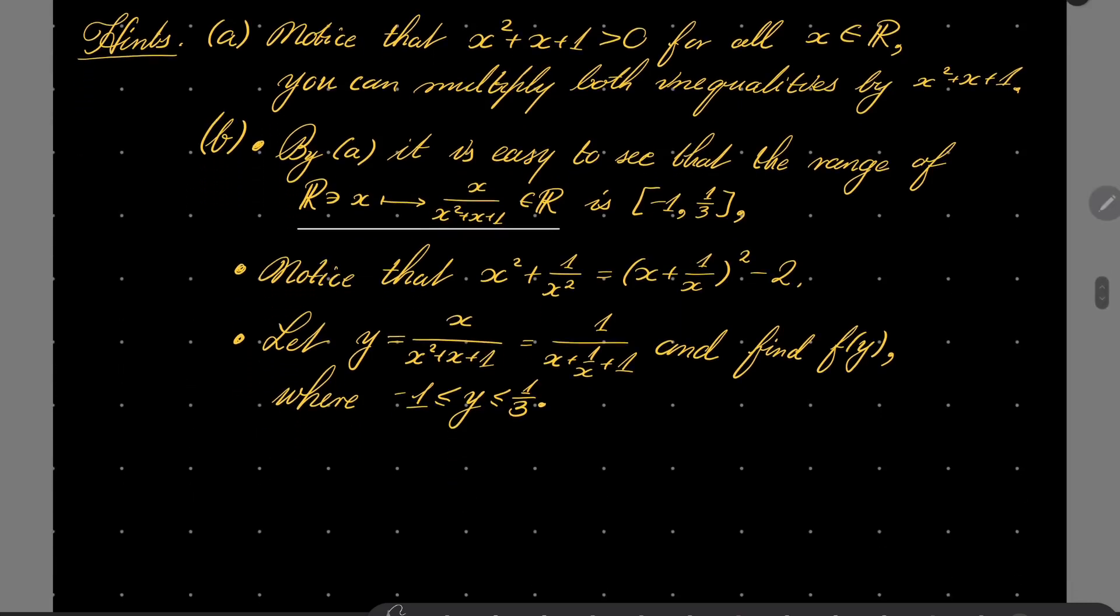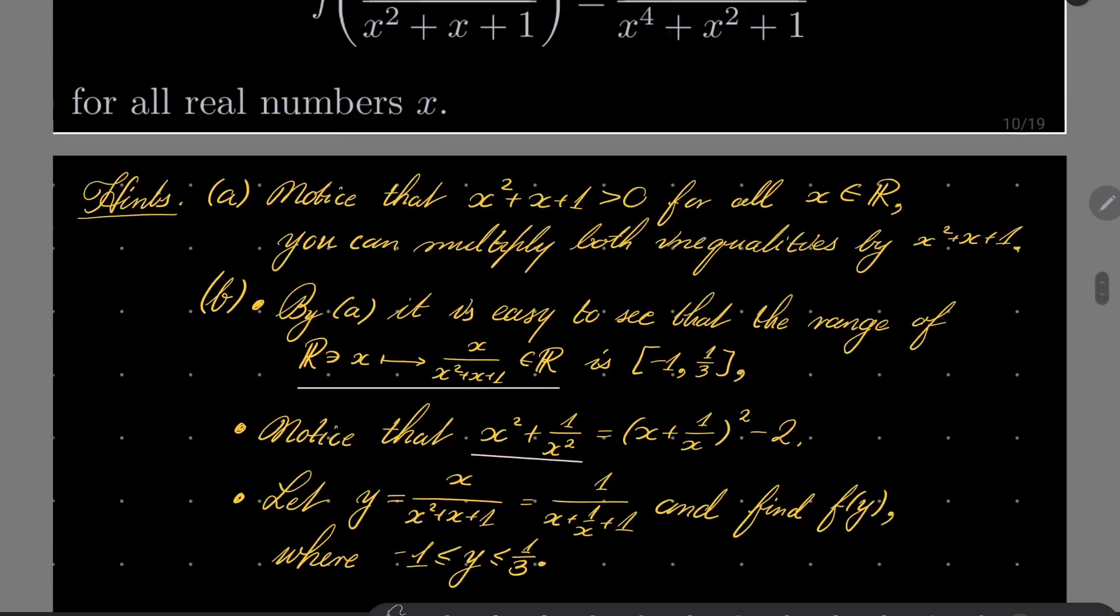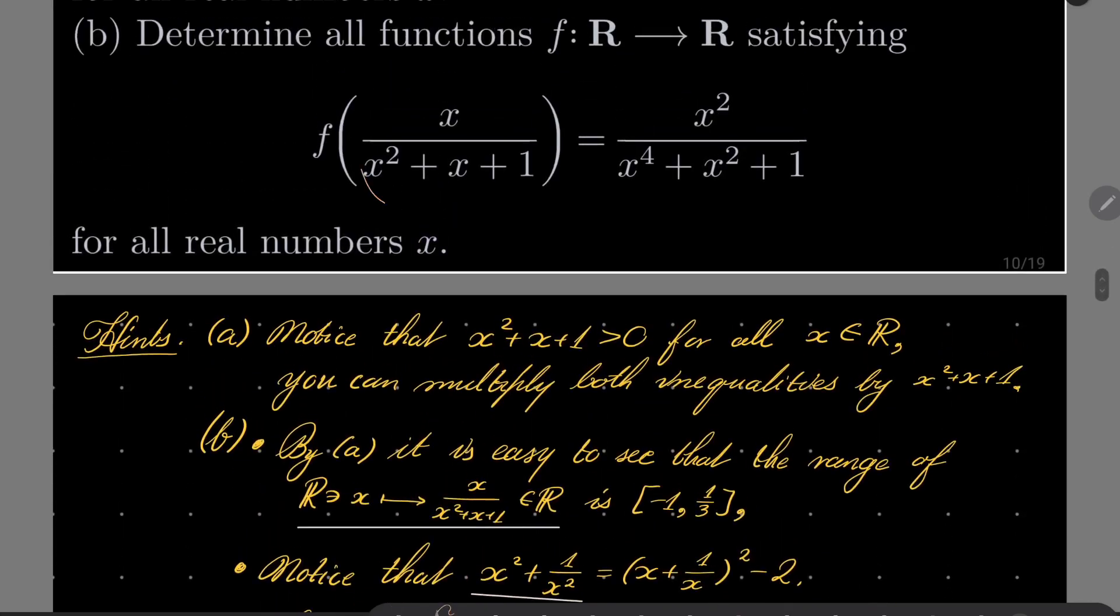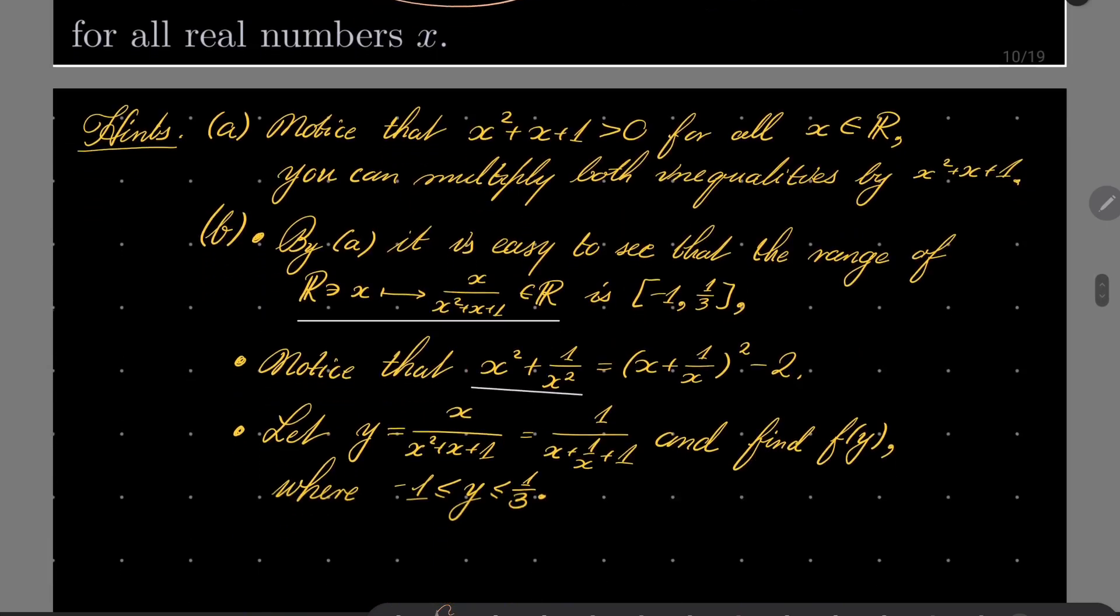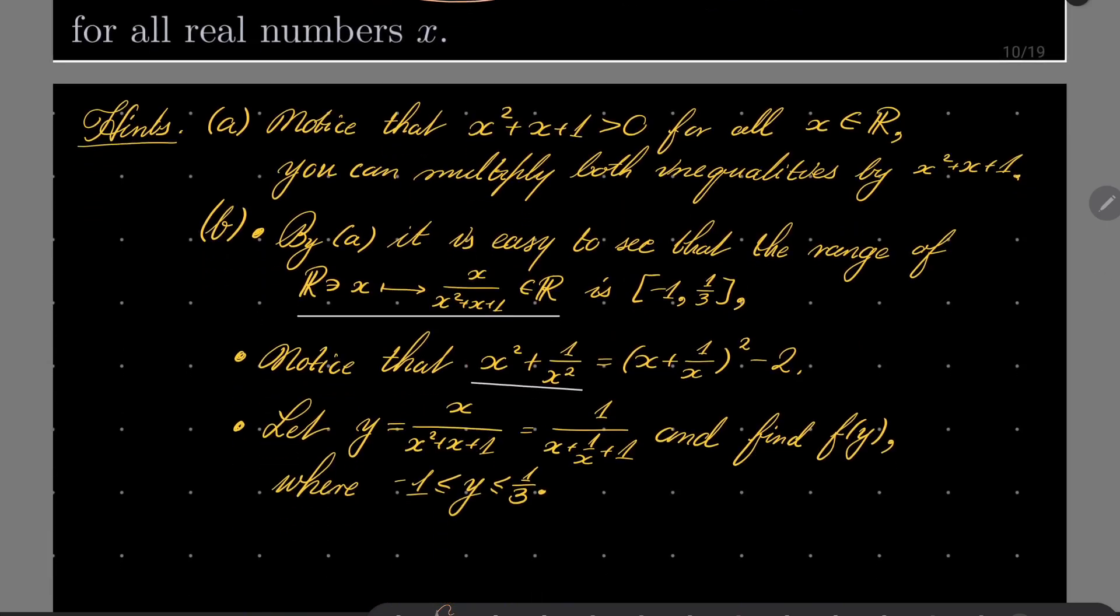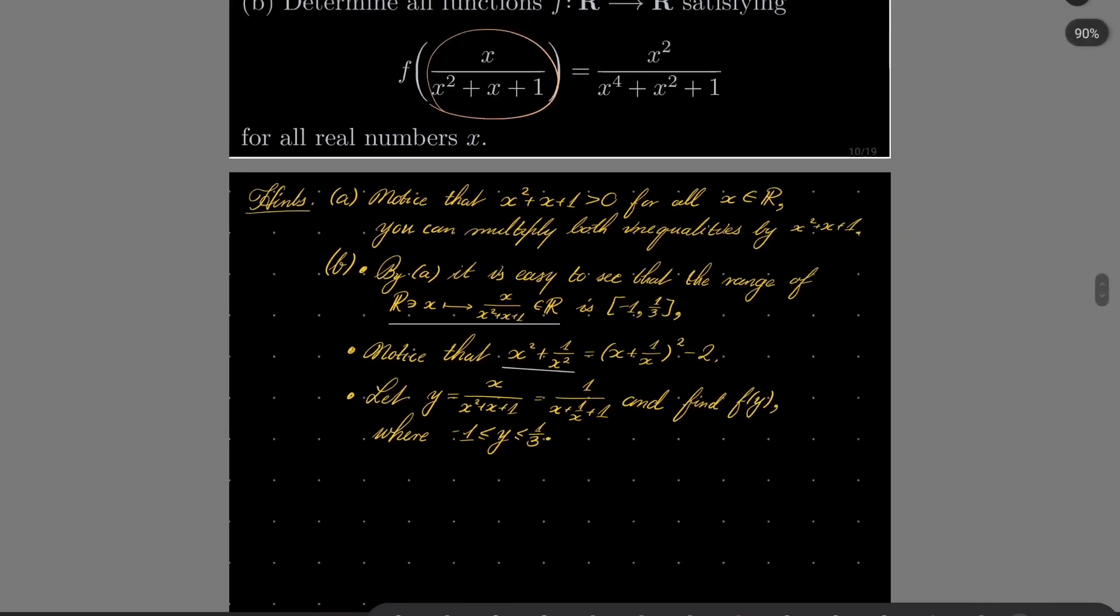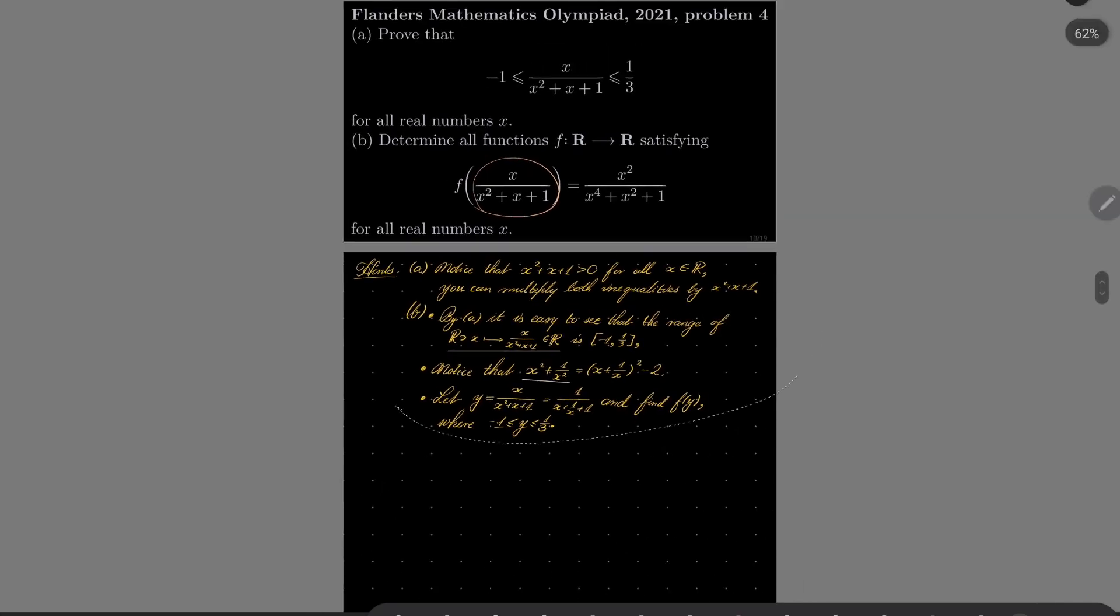Notice that x squared plus 1 over x squared can be written in this way, it's x plus 1 over x quantity squared minus 2, and also let y be the variable which appears here, and try to express the right-hand side in terms of y, and you will get your result. Give this problem a try, and I will see you in just a minute.